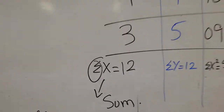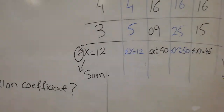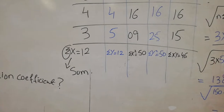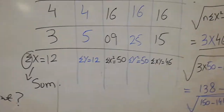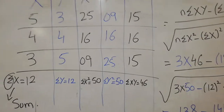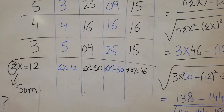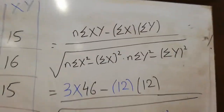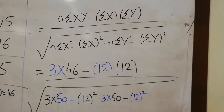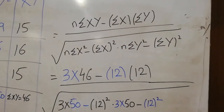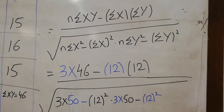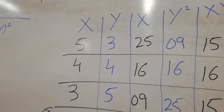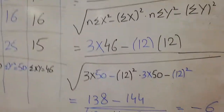After summing, the summation of X is 12, summation of Y is 12, summation of X-squared is 50, summation of Y-squared is 50, and summation of XY is 46. This is my given formula. The number of observations n is 3.